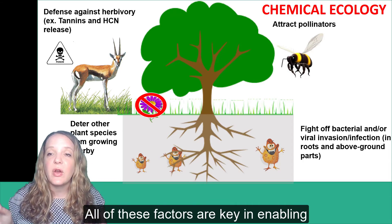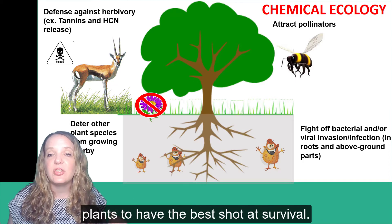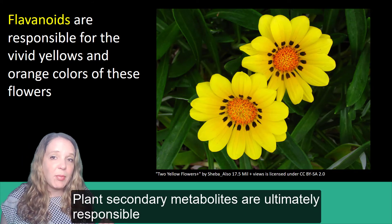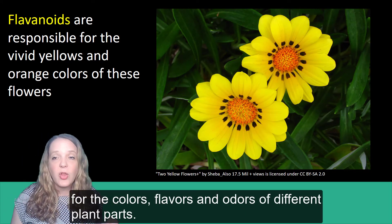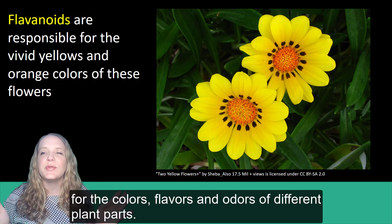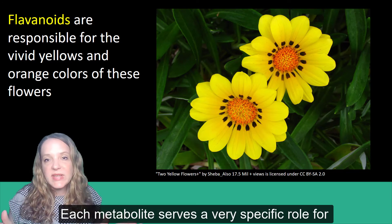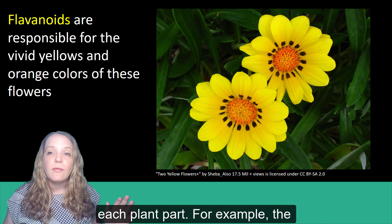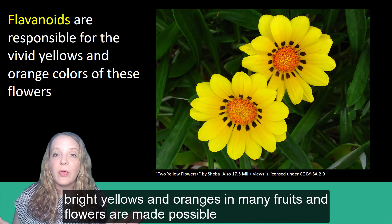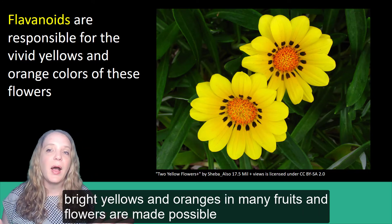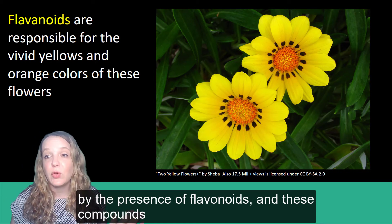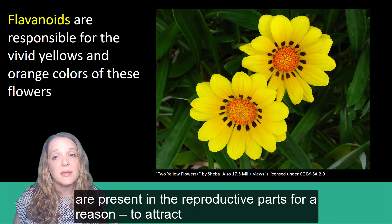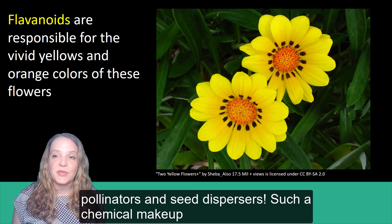All of these factors are key in enabling plants the best shot at survival. Plant secondary metabolites are ultimately responsible for the colors, flavors, and odors of different plant parts. Each metabolite serves a very specific role for each plant part. For example, the bright yellows and oranges in many fruits and flowers are made possible by the presence of flavonoids. And these compounds are present in their reproductive parts for a reason: to attract pollinators and seed dispersers.